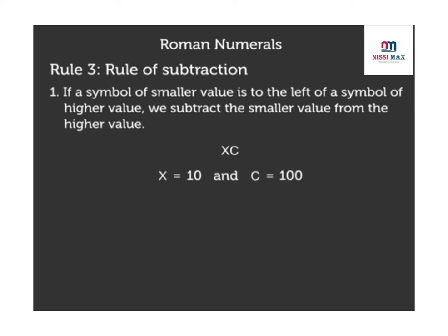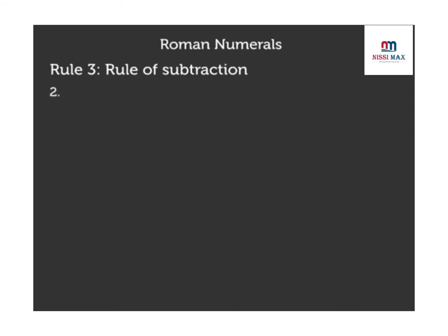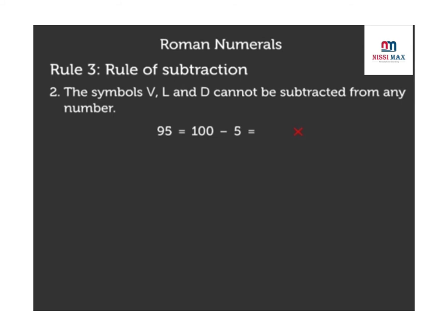The symbols V, L, and D cannot be subtracted from any number. For example, 95 cannot be written as 100 minus 5 equals VC. 95 should be written as 90 plus 5 is equal to XCV.